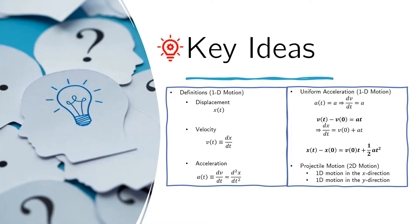To solve this problem, let us recall some ideas from kinematics. First are the definitions of displacement, velocity, and acceleration for one-dimensional motion. If the displacement is given by the function x of t, then the velocity is defined as the derivative of x with respect to t, and likewise acceleration is defined as the derivative of v with respect to t, which means it is also equal to the second derivative of x with respect to t.